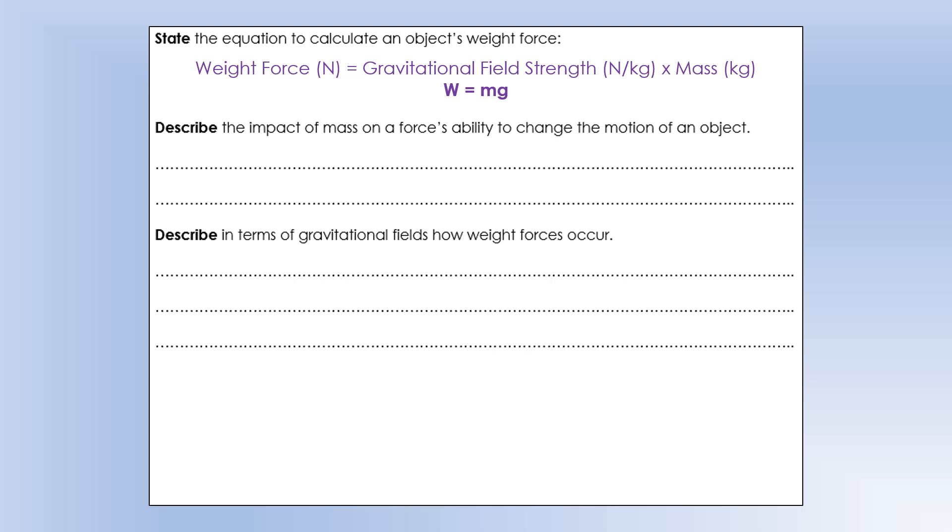Describe the impact of mass on a force's ability to change the motion of an object. Essentially, a larger mass gives an object a larger inertia. For now, larger mass gives it a larger inertia. And a large inertia means it's harder to change the velocity of an object. If you think when you apply a force to a very heavy object, it's really difficult to accelerate, that's because it has large inertia.